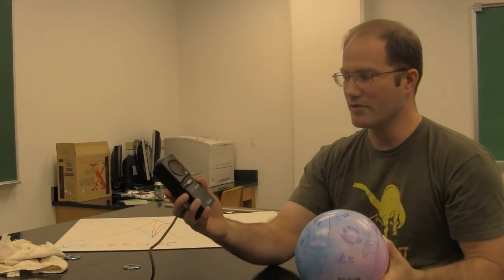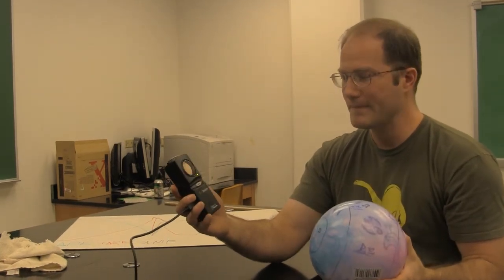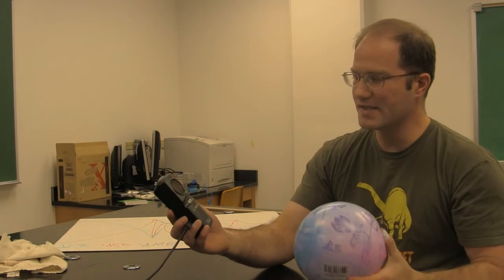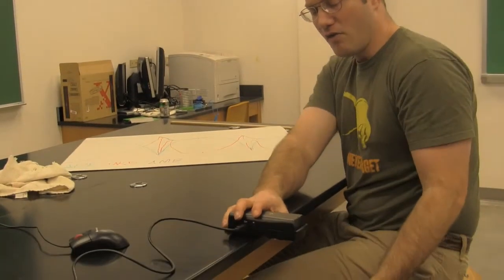This is how we'll do it. Here's your motion sensor. Here is the elastic ball. And probably the easiest way is to just set the motion sensor over the edge of the table and hold the ball underneath it.